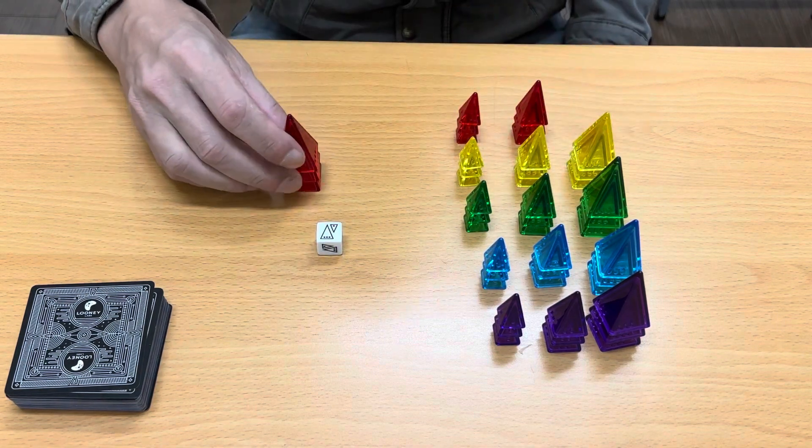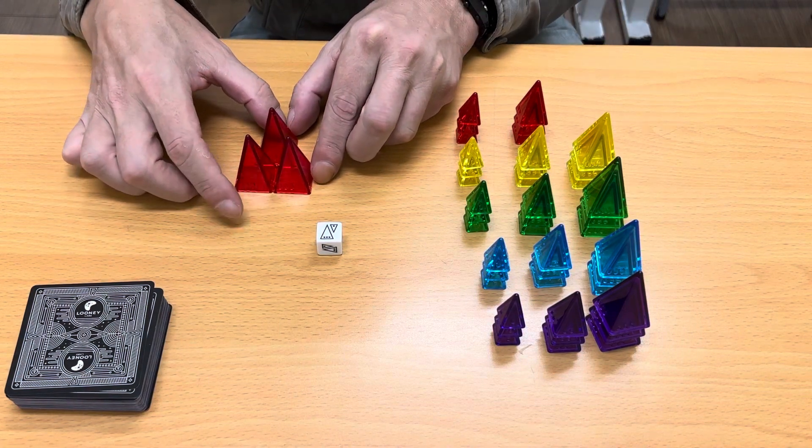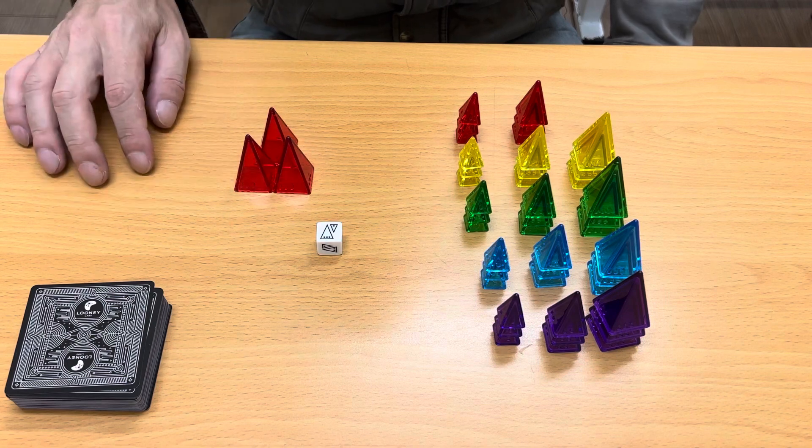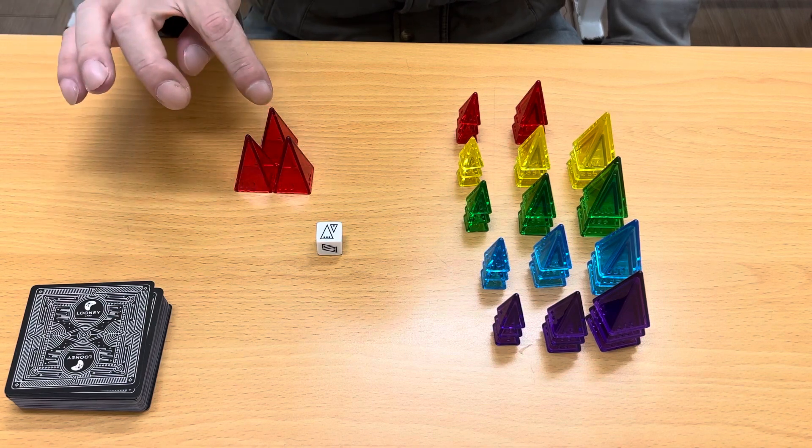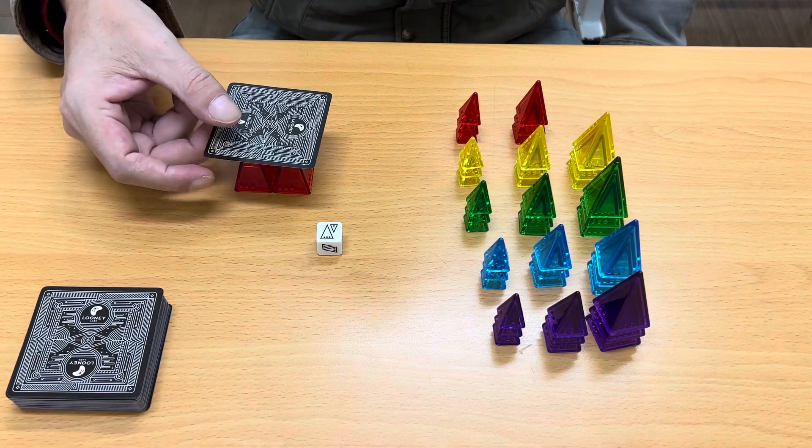Maybe they choose large. So you take one set of the three larges. Doesn't matter the color. And you need to place them on the table in a way that they are touching each other. And you take a card and you place it on top.